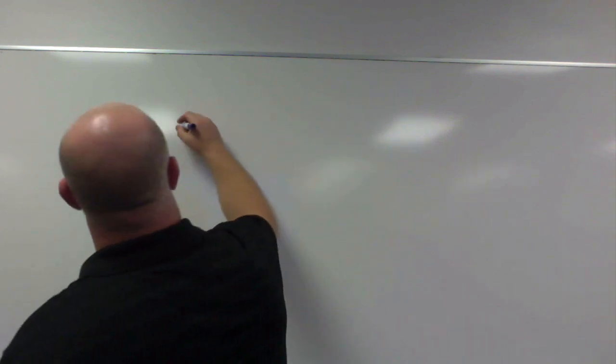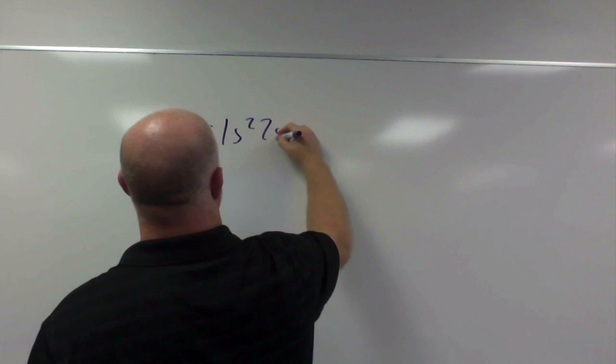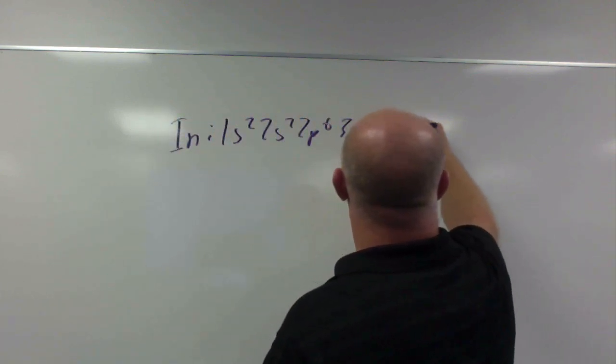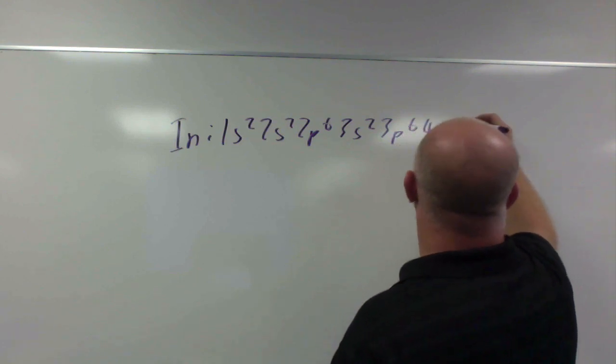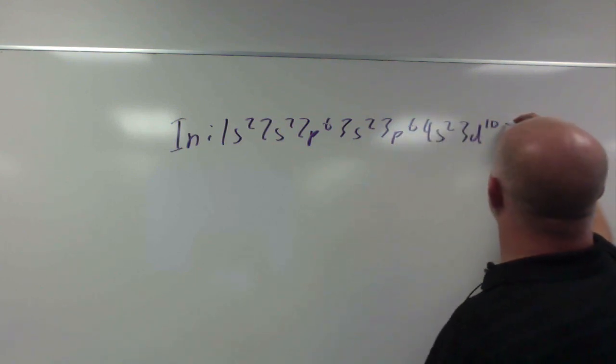Okay. So we take a look at group 13 and let's pick one element out of it. Let's say indium. So indium, if we take a look at indium, it's number 49 on the periodic table. And if we do its electron configuration. So 1s2, 2s2, 2p6, 3s2, 3p6, 4s2, 3d10, and then it's a 4p1.